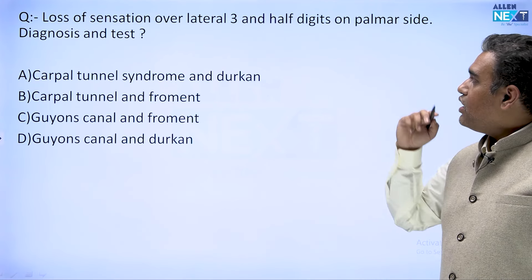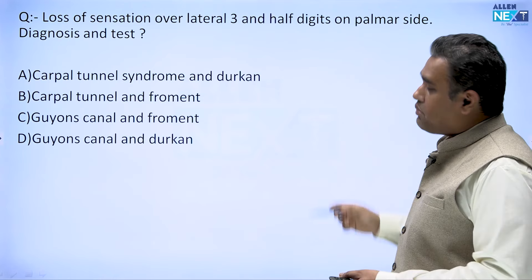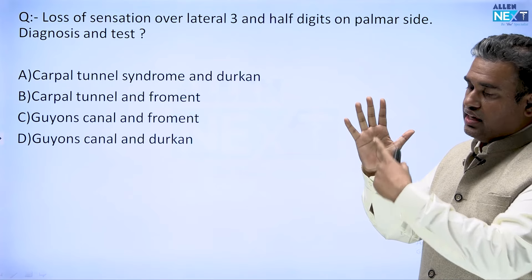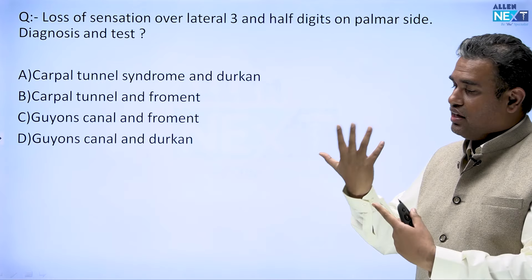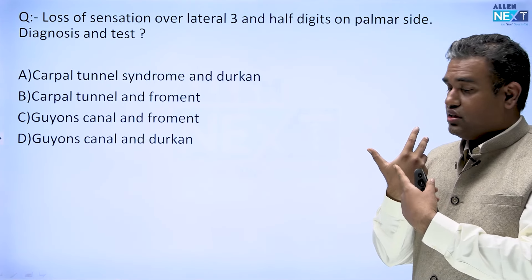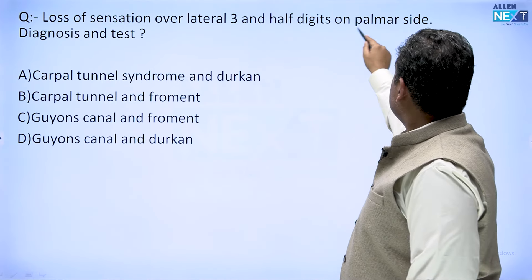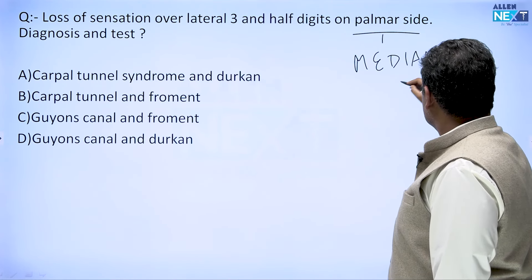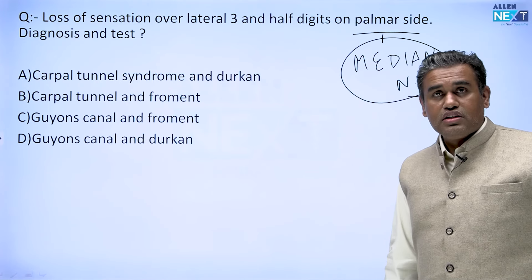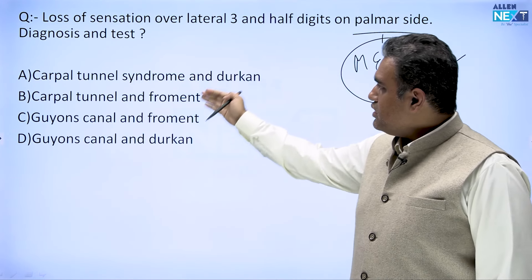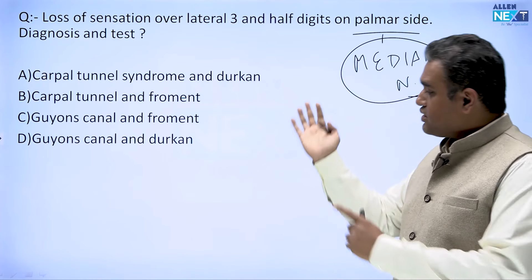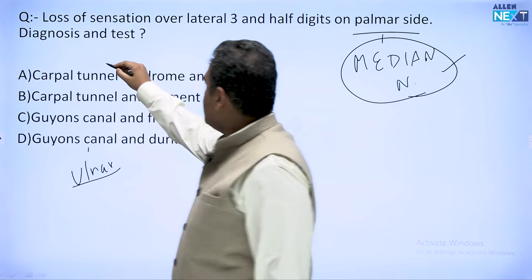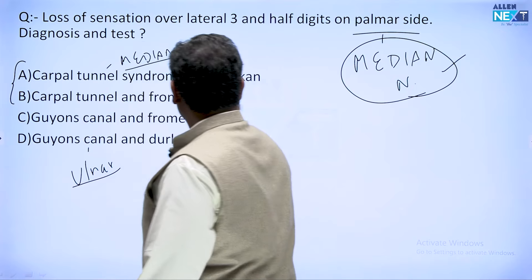Next question: loss of sensation over the lateral three and a half digits on the palmar side. The thumb side — lateral three and a half digits — loss of sensation on the palmar aspect. Basic knowledge tells us this is the region of the median nerve. The diagnosis is carpal tunnel syndrome. The options include two tests: Tinel's sign and Durkan's test. Guyon's canal is on the medial side of the wrist and relates to the ulnar nerve, so those options are eliminated. The answer is between options with carpal tunnel and the correct test.